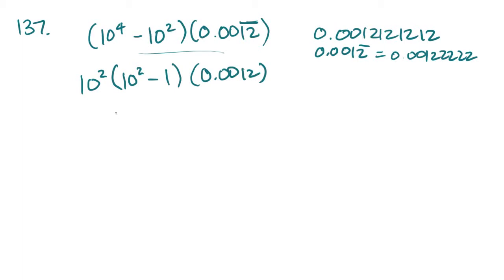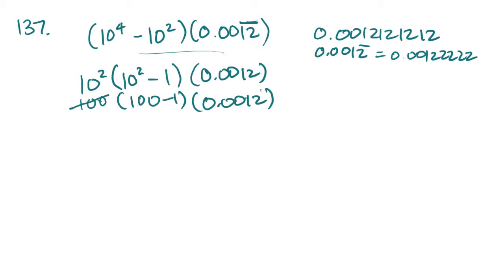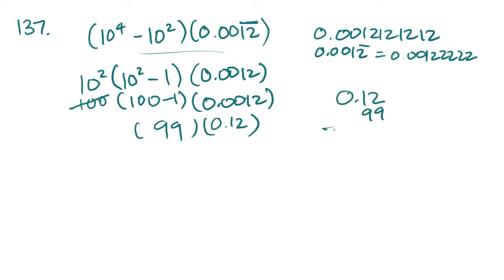10 squared is the same as 100, so you really get 100 minus 1, which is going to be 99 times 0.0012. This number multiplied by that number is the same as moving the decimal over twice, so it becomes 0.12 times 99. Then you just multiply them and solve for the answer.